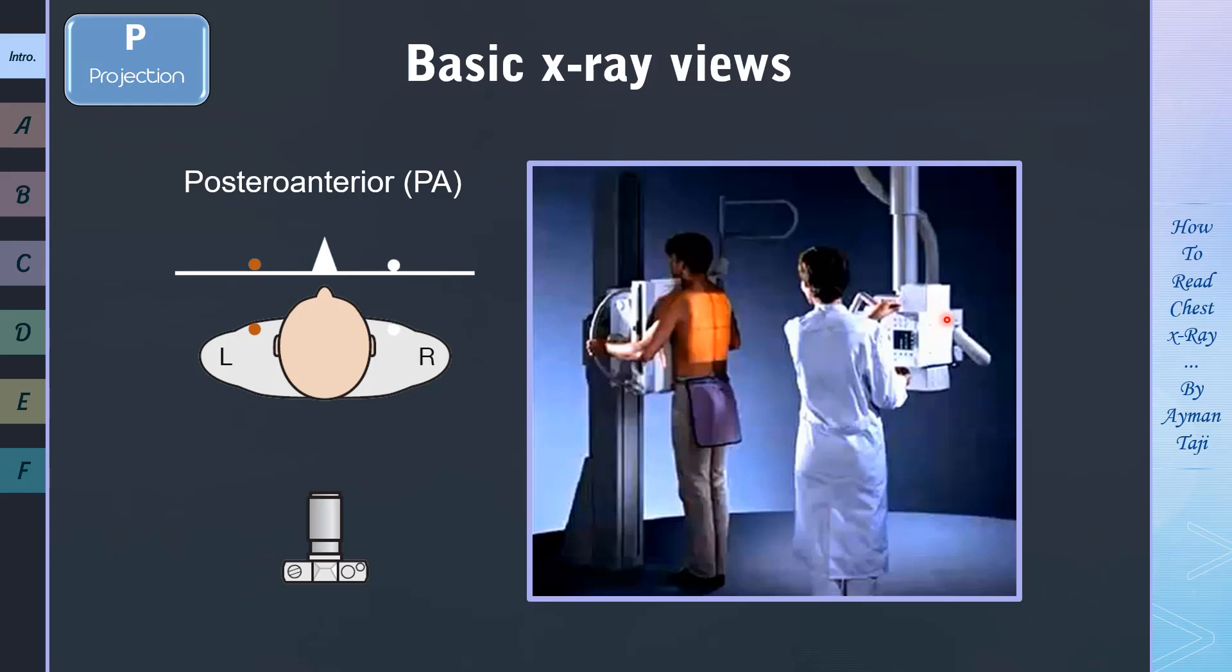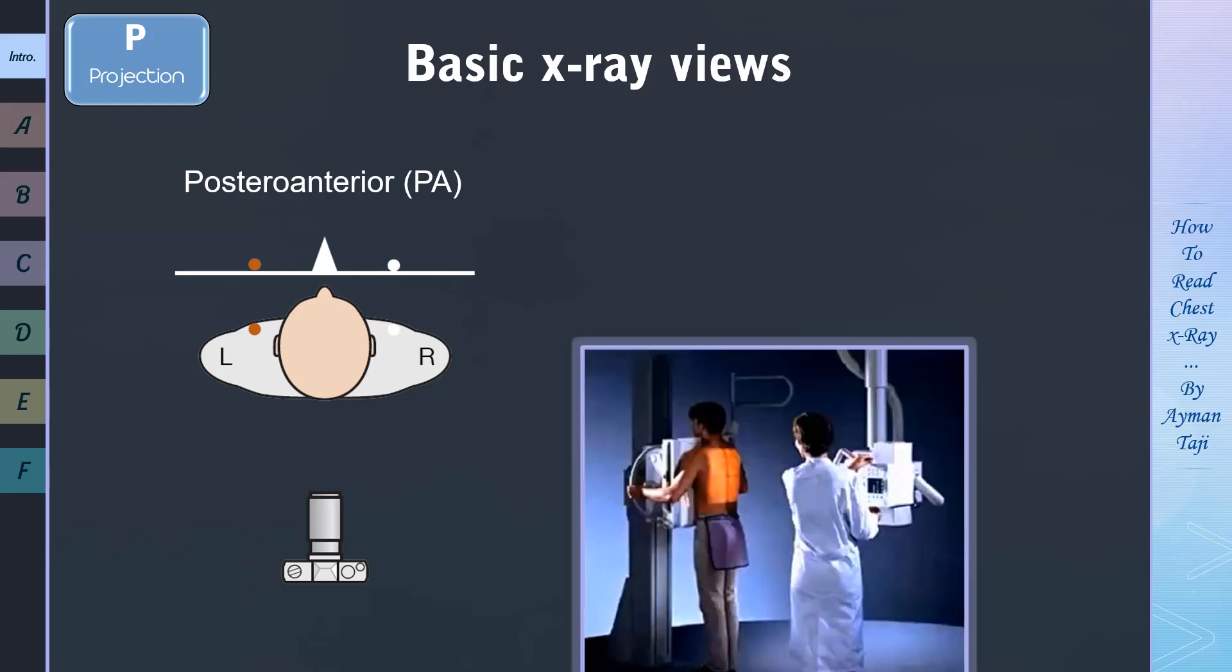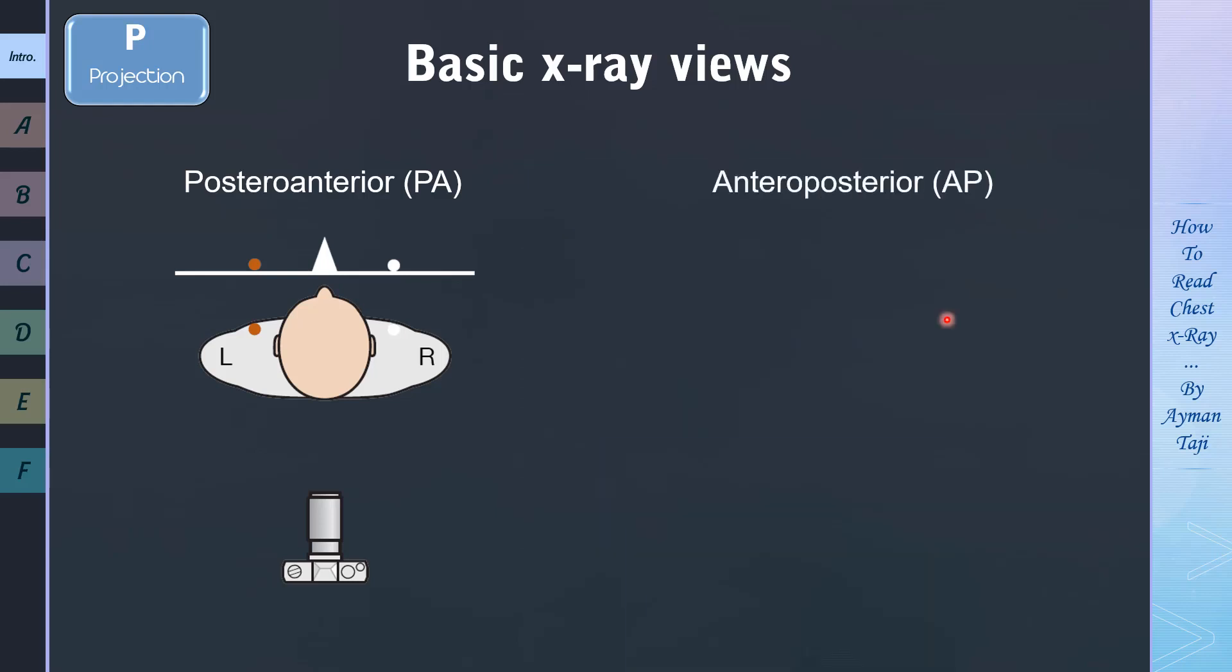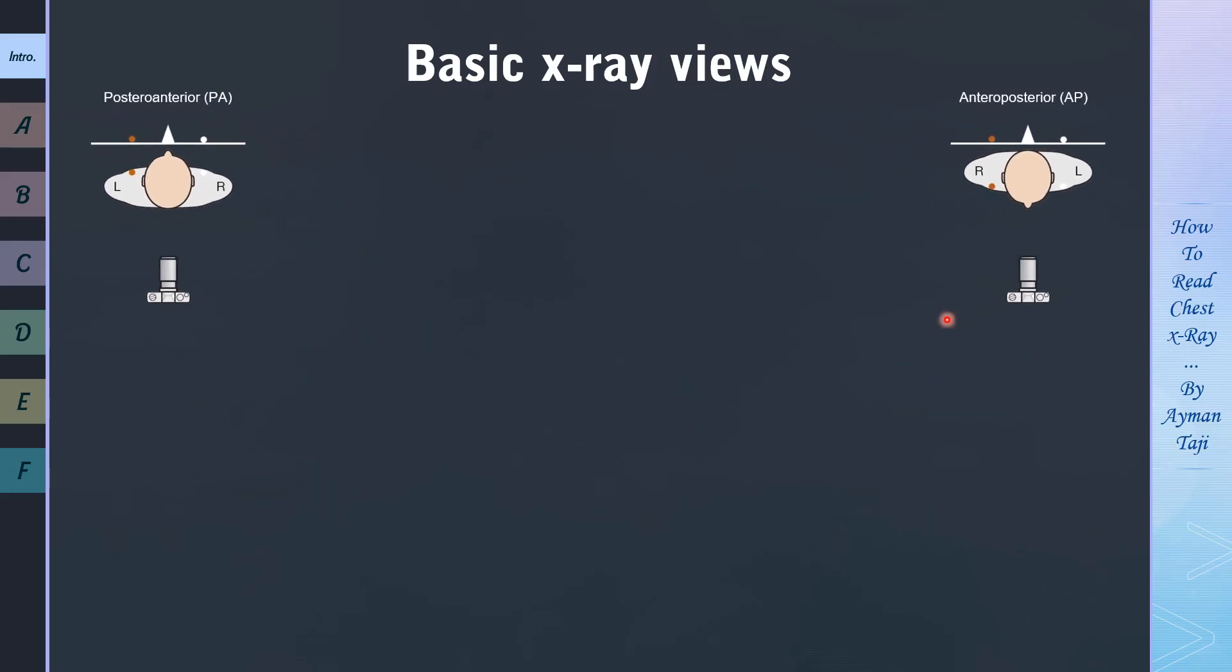So this is the posterior anterior or PA view. Another view is called anterior posterior or AP view, in which the positions of the X-ray source and detector are reversed. And here, you'll ask yourself, so what, what's the difference? Well, let me tell you that the difference is great, and I'll tell you why. It's all about the heart and mediastinum. Now first, remember that the heart is closer to the anterior chest wall than the posterior one, okay?